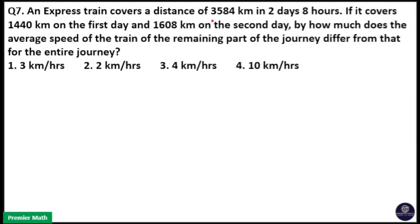An express train covers a distance of 3584 km in 2 days and 8 hours. If it covers 1440 km on the first day and 1608 km on the second day,